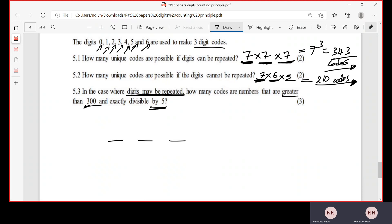to form a three-digit code, and it must be greater than 300. For it to be greater than 300, the first digit must be 3, right? Or it can be 4, or it can be 5, or it can be 6. So if it starts with 3, 4, 5, or 6, it will definitely be greater than 300. For it to be divisible by 5,